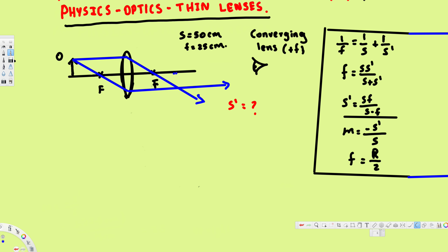Wherever these two lines meet, that's where the image forms. From the diagram, you can see the image forms at a distance that is also two times the focal length — the same distance as the object from the lens. To prove this mathematically, we'll use the image distance equation.